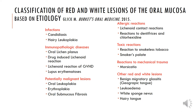To classify the red and white lesions of the oral mucosa based on etiology, I have used the classification proposed by Burkitt's Oral Medicine, which categorizes them based on infections, immunopathologic diseases, potentially malignant lesions, allergic reactions, toxic reactions, reactions to mechanical trauma, and other red and white lesions. We will be discussing diseases based on this classification, covering the most important ones under each heading.